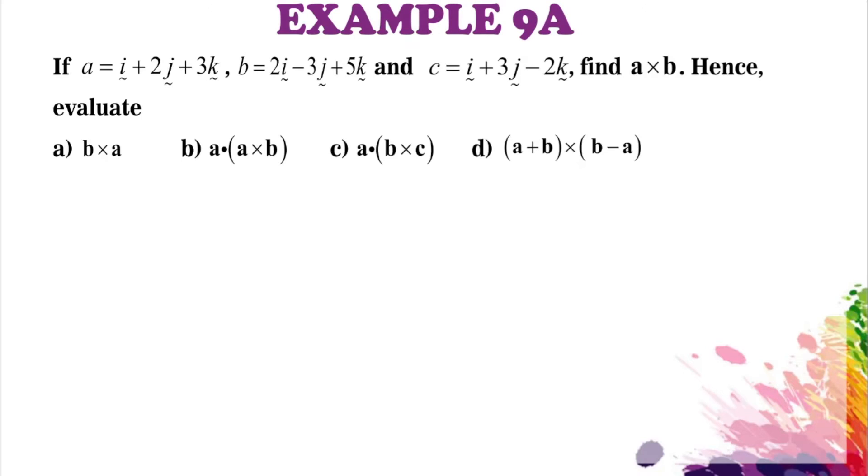Example 9a: given three vectors, find A cross B, hence evaluate the following parts. So first of all you have to find A cross B by the expansion of determinant.